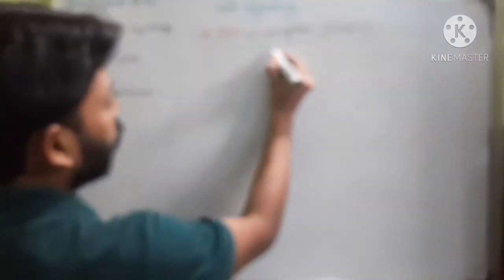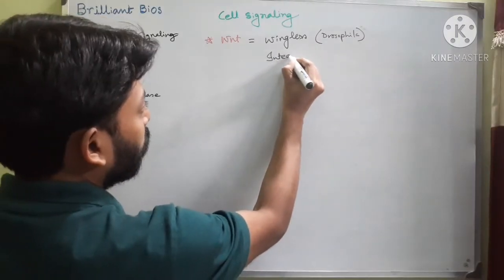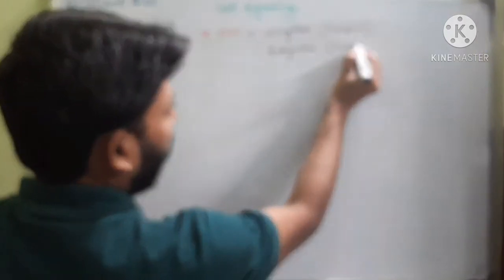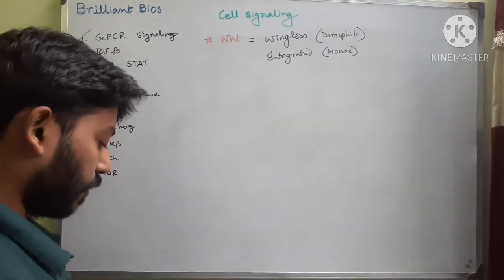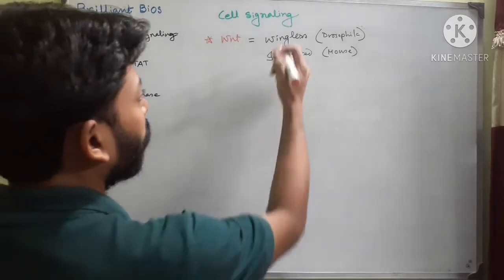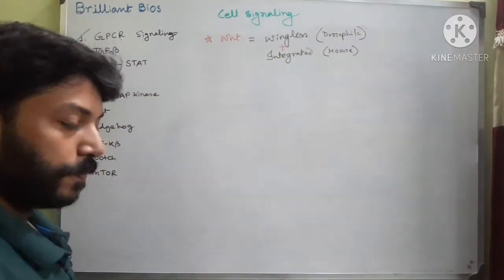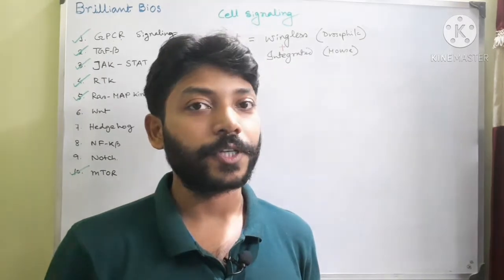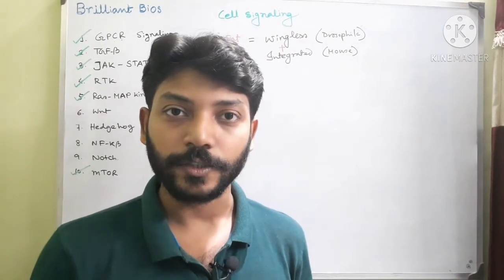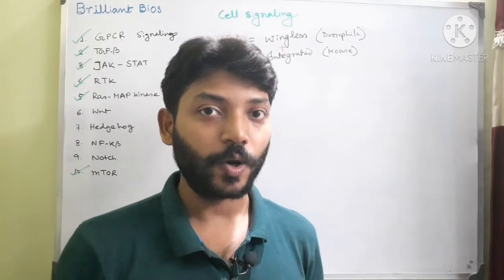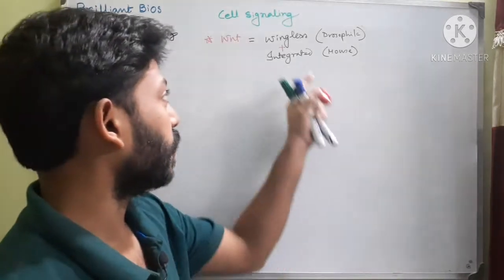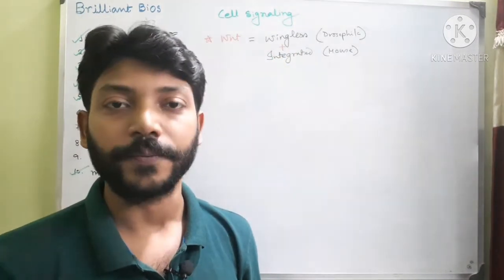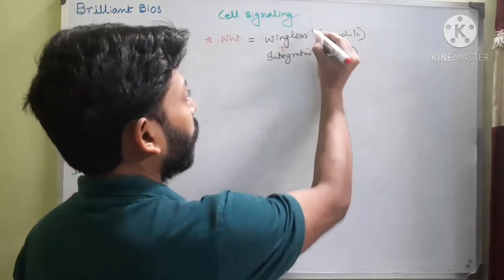Another name comes from 'integrated,' from mouse. There are histories behind the naming of these two genes, wingless and integrated. This Wnt signaling pathway was initially discovered in Drosophila, and scientists found that if there is any mutation or any problem in this wingless gene then the Drosophila or insect does not develop wings, so they named it 'wingless.'